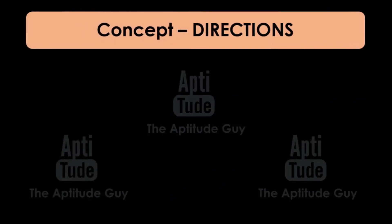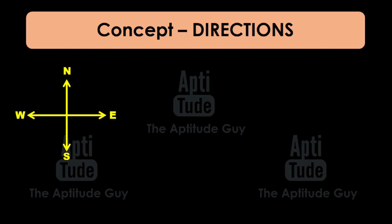When it comes to the concept of directions, the first thing you definitely need to know is north, south, east, west. The second thing you need to know is north-east, south-east, south-west, north-west. Other than the directions, you also need to know left and right, and one small mathematical concept.